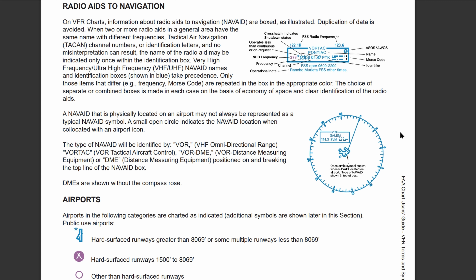You don't necessarily need to know exactly what they are, but just remember that there are four types, and you can find the identifier of what kind of navigational aid it is at the very top of the box. So if you look up here, this one says VORTAC — so that would be the type of navigational aid it is. This could change; like in this example, it's VOR for this specific one, and below it is just the name. Again, there's relevant information inside of it.